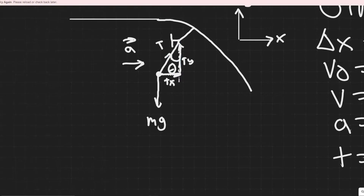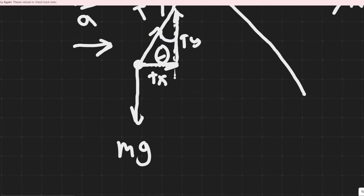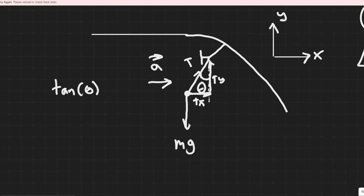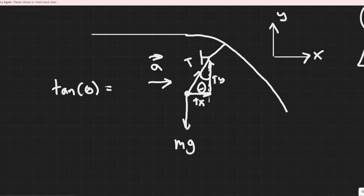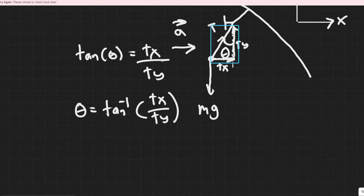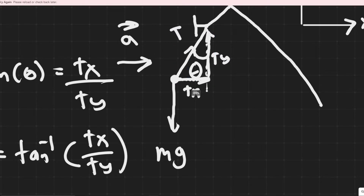To find theta, we use trigonometry. The tangent of angle theta equals opposite over adjacent. The opposite side of this angle is t sub x, and the adjacent side is t sub y. So if we can solve for t sub x and t sub y, we just take the arctangent of t sub x over t sub y to solve for theta. We just need the tension in the x and y directions.